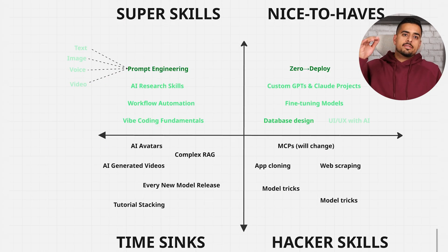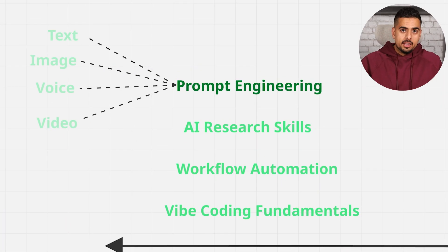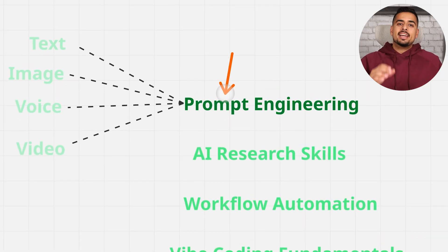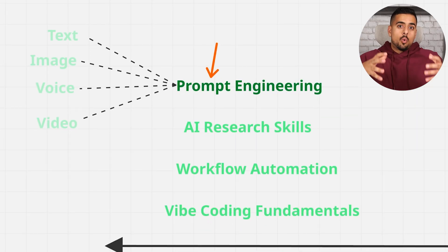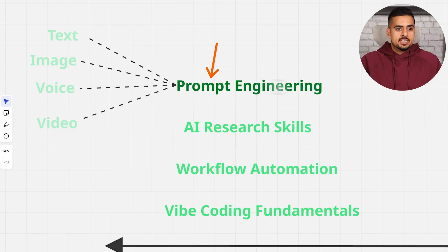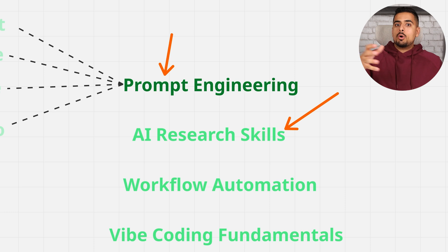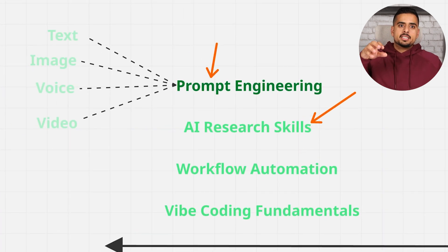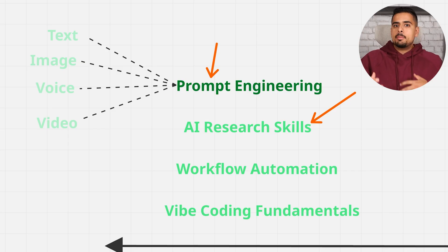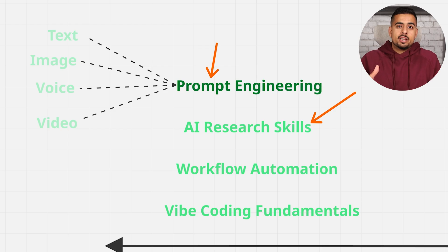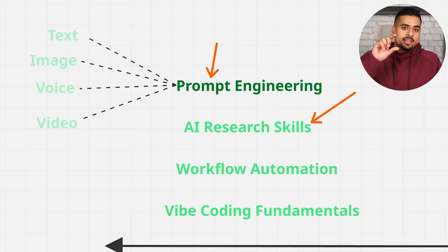In the quadrant, we have super skills, nice-to-haves, time sinks, and hacker skills. Super skills are the ones that multiply. I always harp on prompt engineering because every new thing in GenAI just requires me to apply my existing expert skill set at prompting to a brand new domain. If you can do AI research, you can go back and forth with something like Perplexity and basically cheat time — having AI read documentation, watch YouTube videos, to help you prompt apps you might not have experience with. Because you have the core skill set, you can leverage AI research with your prompt engineering to learn how to use any generative AI app.